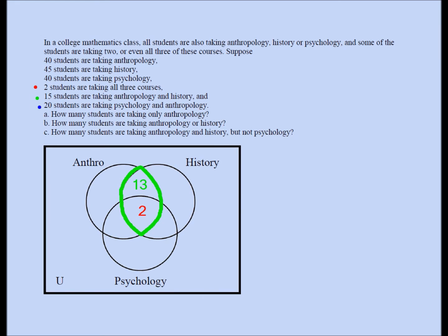20 students are taking psychology and anthropology, so the football between psychology and anthropology should add up to 20. It doesn't say 20 took only psychology and anthropology — then 20 would go in just that region. Since it says 20 took psychology and anthropology, some may or may not also be taking history, so those two numbers in that football should add up to 20. That means the non-center part of the psychology-anthropology football is 18.